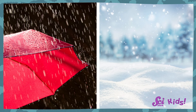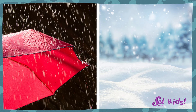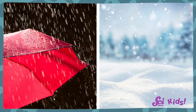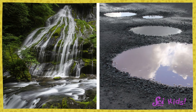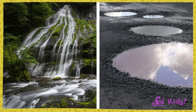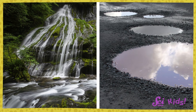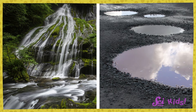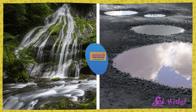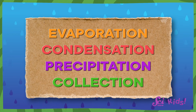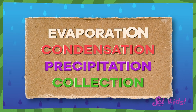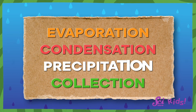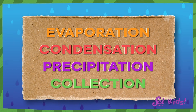Earth's water is constantly being recycled, coming down from clouds as raindrops and snowflakes, running across the ground in streams and filling up puddles, and going back into the sky and forming more raindrops. Scientists give these steps names: evaporation, condensation, precipitation, and collection.